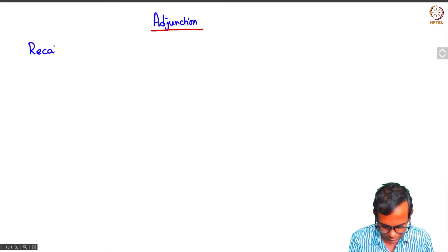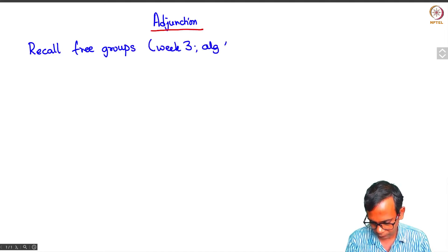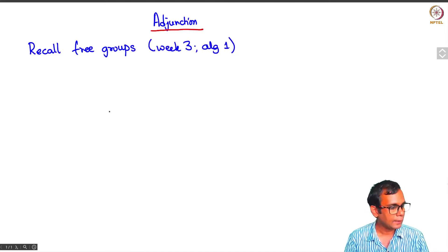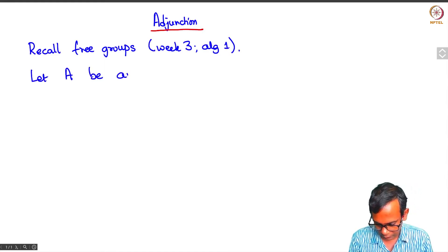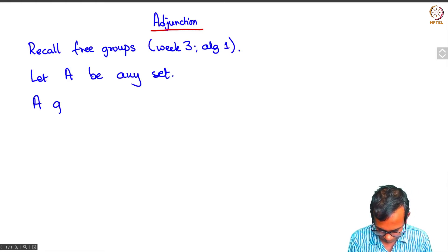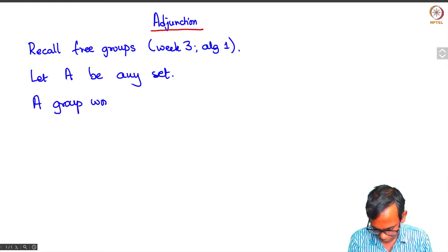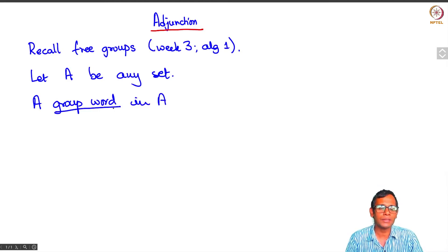So recall free groups. You can look at week 3 of algebra 1 and how it works is this. So let A be any set and a group word in A. I am using the phrase group word because if I just use words I will get what is called the free monoid. But I want to construct the free group.